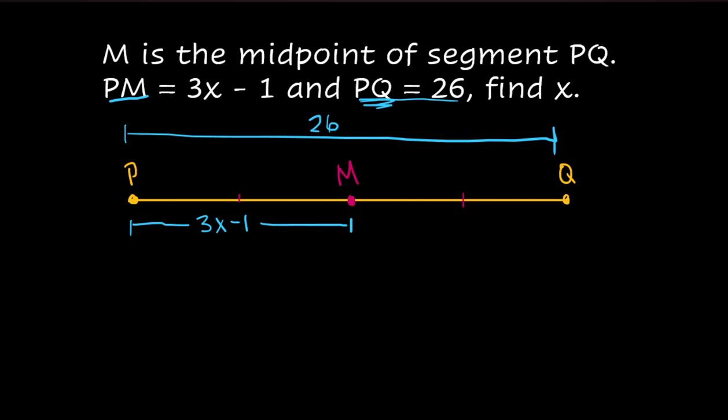If this is a midpoint, that means these two pieces are the same and the entire thing together is 26. So in order to solve this, I can do a couple different things. Somebody might be going, oh, well, I just need to double it and go 3X minus 1 here and then put these two together and set it equal to 26.